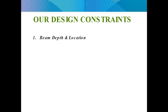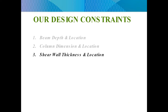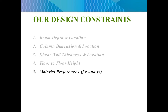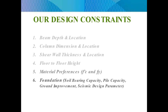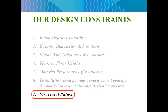Our usual design constraints are beam depth and location, column dimension and location, shear wall thickness and location, floor-to-floor height, material preferences — meaning the strength of concrete and the strength of steel — the foundation, which includes the soil bearing capacity, pile capacity, and ground improvement if necessary, and seismic design parameters. Of course, the structural ratios which I will discuss later during this presentation.